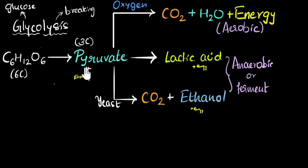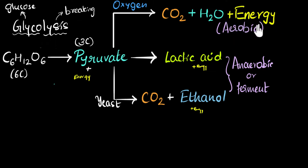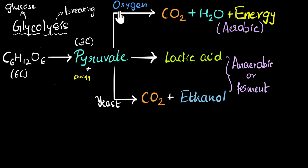When pyruvate gets further broken in the presence of oxygen, that's when we get aerobic respiration — and that's mostly what's happening inside your cells right now. On the other hand, if pyruvate gets broken without oxygen, we get fermentation. One important difference: breaking pyruvate in the presence of oxygen releases a lot of energy, whereas breaking pyruvate without oxygen does not release any further energy.